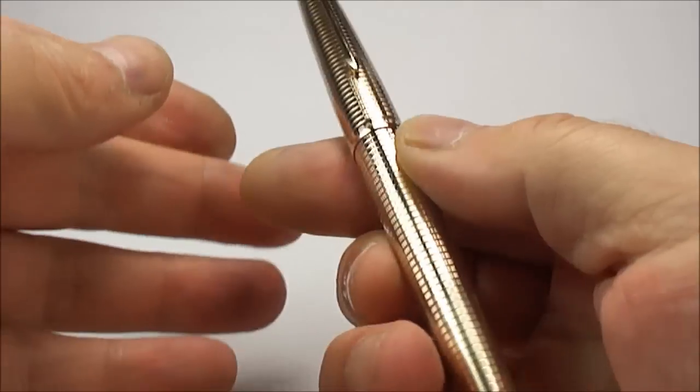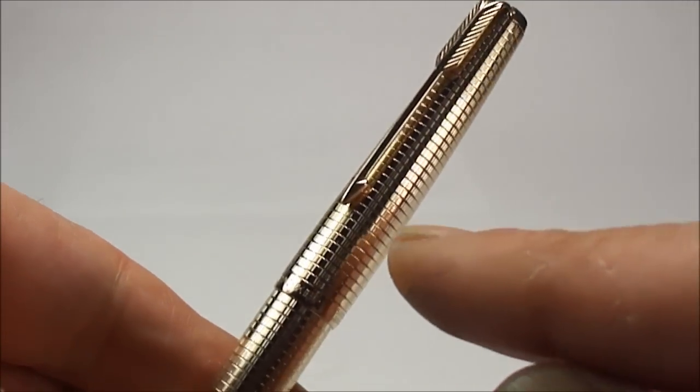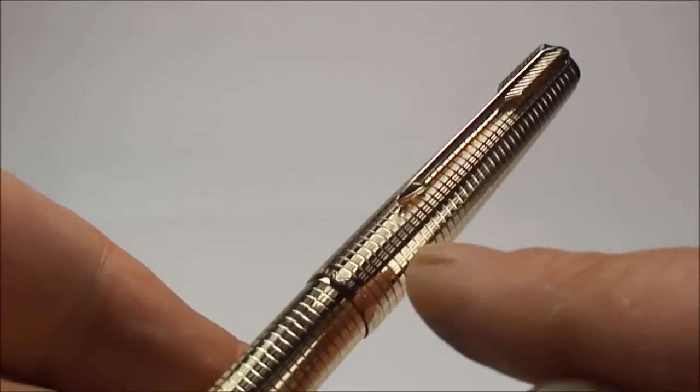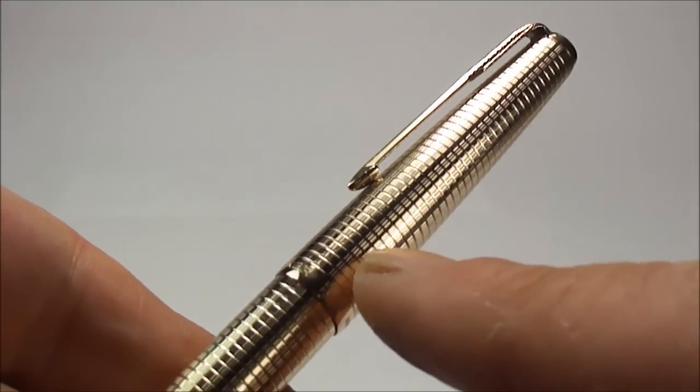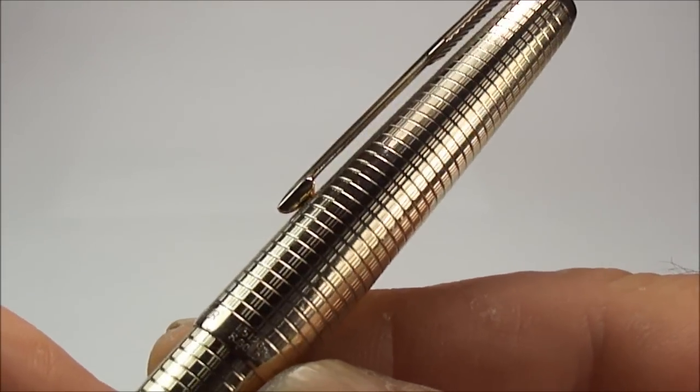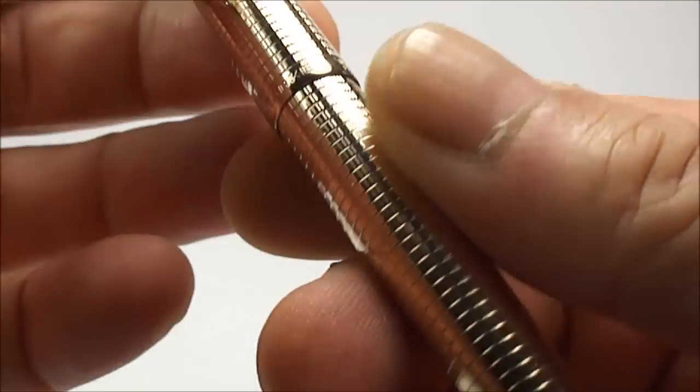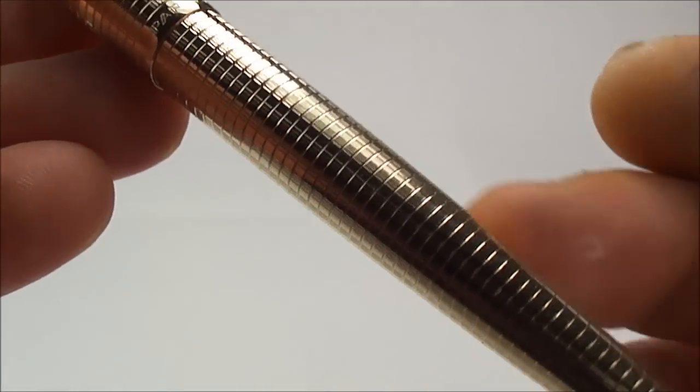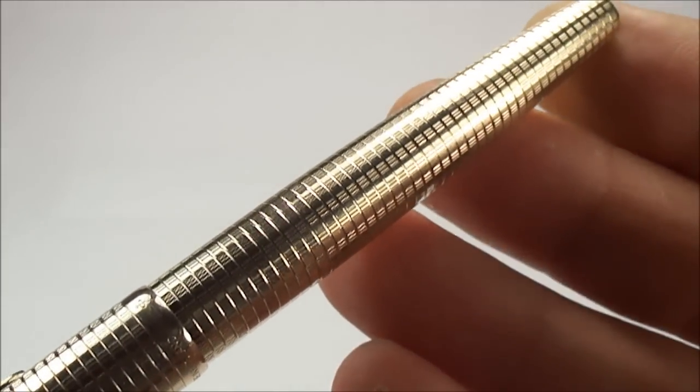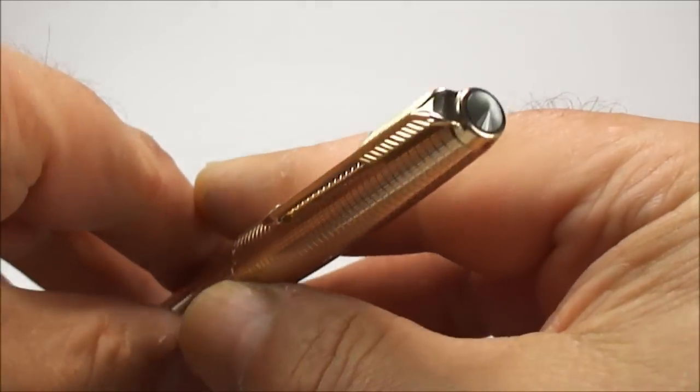For people that don't know, the Consort comes in a very sought after and collectible pattern. The Consort pattern is these horizontal and vertical lines, or some people like to call it a brick pattern. I'm hoping you can actually see that. An absolutely beautiful pen.